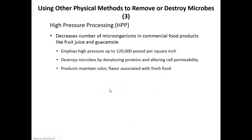The last physical mechanism is high pressure processing. The pressure used here is much greater than in an autoclave — up to 120,000 pounds per square inch. High pressure processing denatures proteins and alters cell permeability by increasing environmental pressure. It does not change the flavor or color of foods, but it does kill microbes.